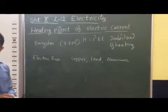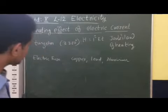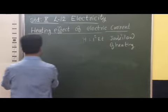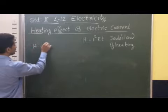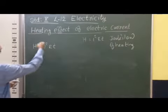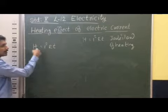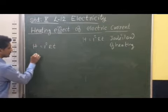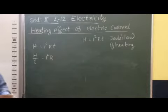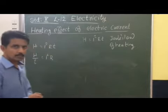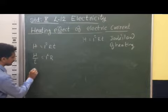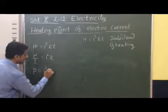The amount of heat energy produced is H equal to I²RT. If we consider the rate of heat energy produced, that is H divided by T, it equals I²R. The rate at which heat energy is consumed is called electric power. Electric power is represented as P, so P is equal to I²R.